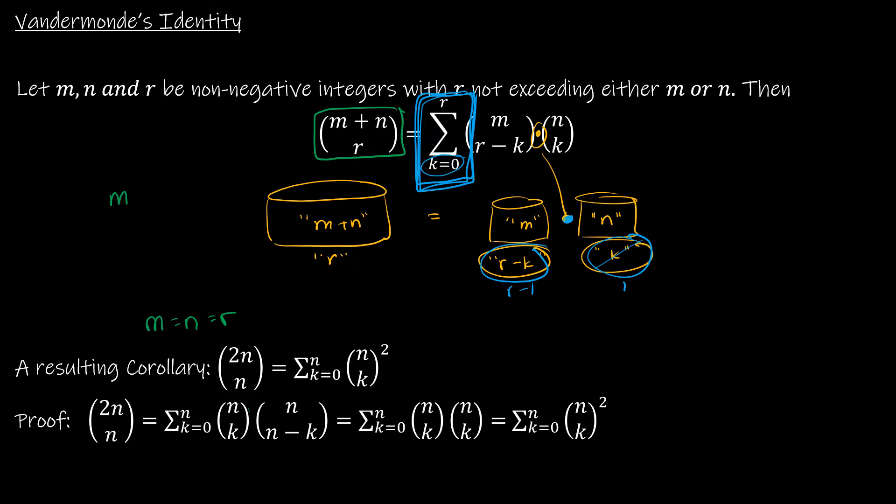So m plus n choose r, if I replace m with n, and I replace r with n, then it makes sense that I could rewrite that as 2n choose n. Again, only because this is true. m is equal to n is equal to r.